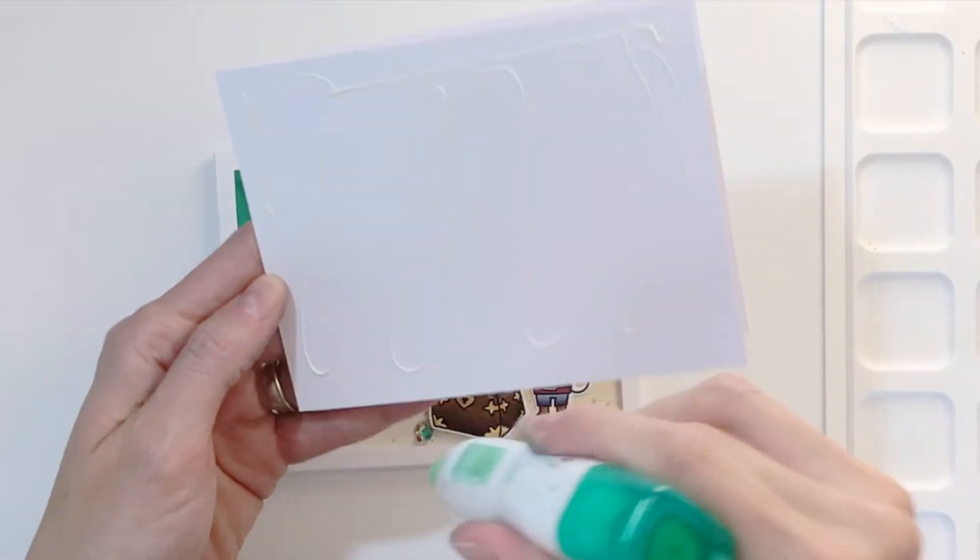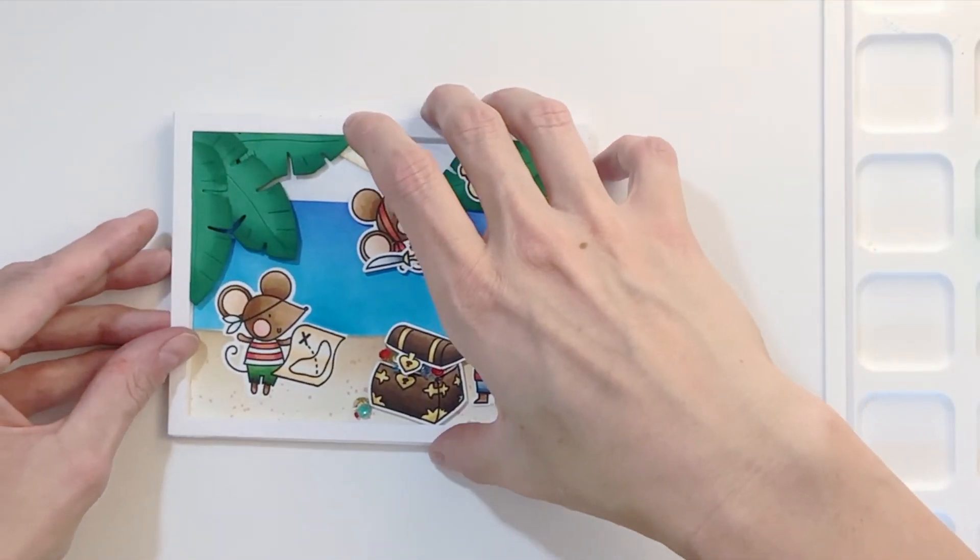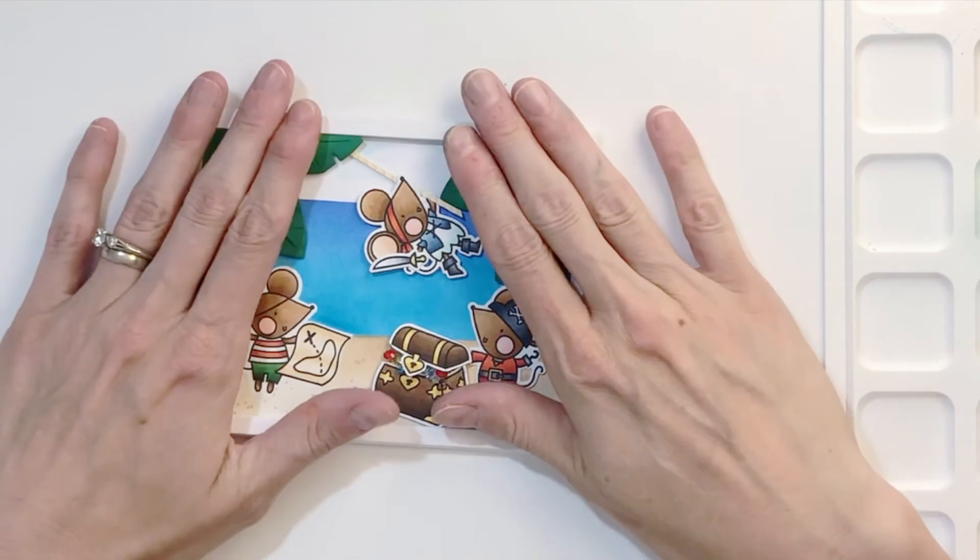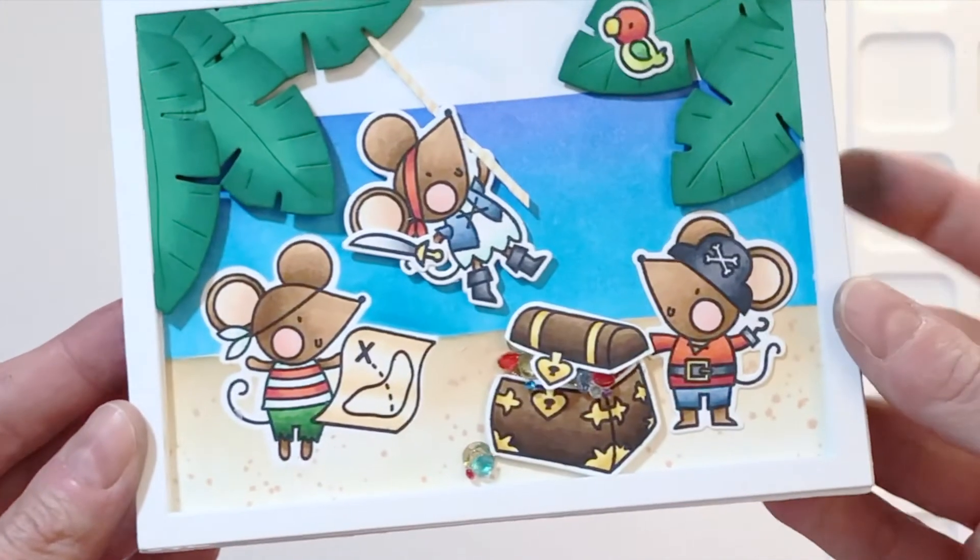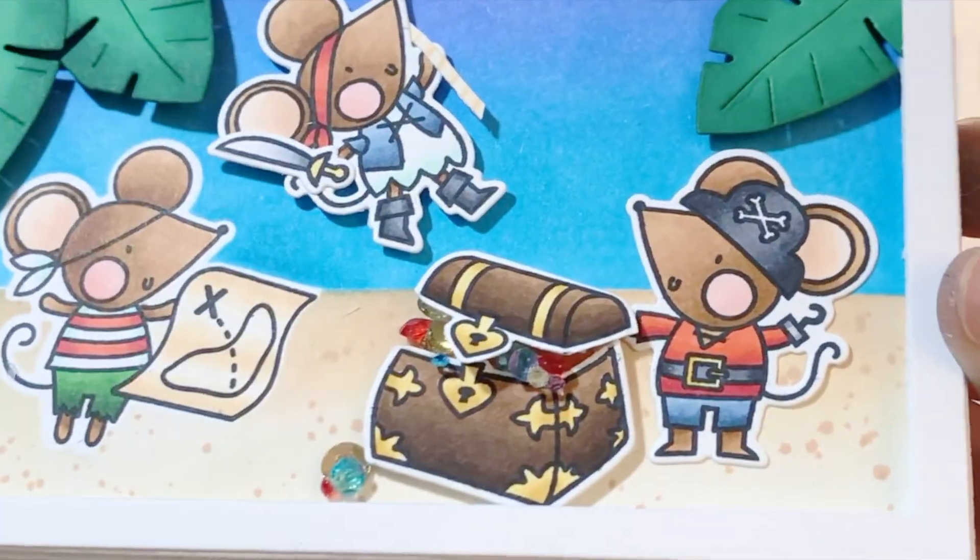And I'm almost done with this card. The last thing I need to do is just adhere it onto my A2 top folding card base turned on its side. And once I stick that down, my card is actually all done. I now hold the card to the camera so you can get a good look at all the details in this card.